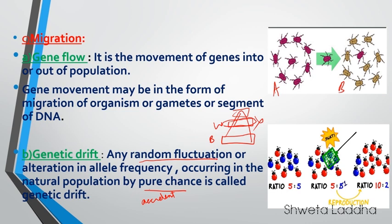One more example: in a population of beetles, there are two types — blue and red — both five in number, so their ratio was 5 to 5. But accidentally somebody killed four of the blue beetles with a racket. Now, the five red beetles are reproducing and giving rise to five more, whereas the one remaining blue is giving rise to only one. So the ratio changed from 5:5 to 10:2. Such accidental deaths and random fluctuations are called genetic drift — it may occur by pure chance.